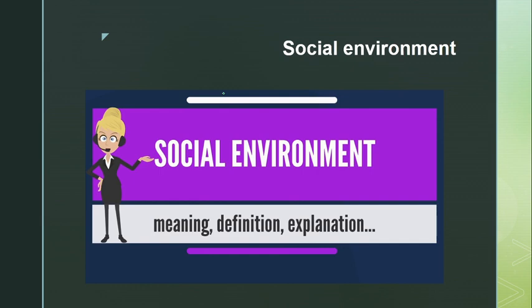Let's try to know about the meaning, the definition, and explanation of the social environment. When we say social environment, it involves the social context and the socio-cultural context or milieu, which refers to the immediate physical and social setting — the place where we live. The social setting in which people live or in which something happens. Our neighbors, the mountains, the rivers, the forest — those are part of our social environment.